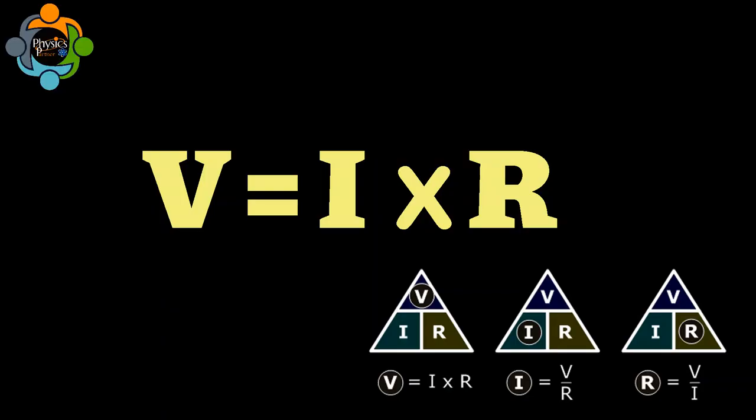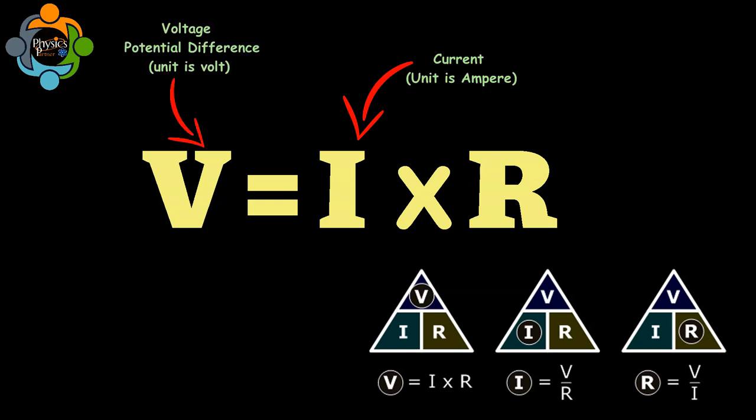Where I is the current which is measured in amperes, V is the voltage or potential difference measured in volts, and R is the resistance measured in ohms. The technical details of Ohm's law are crucial for understanding how electricity works in circuits.